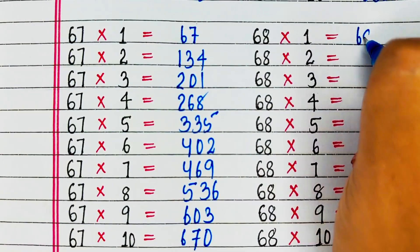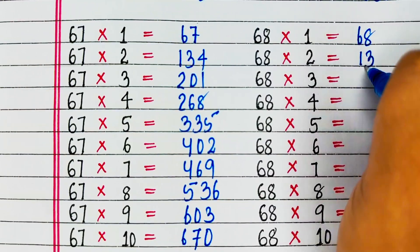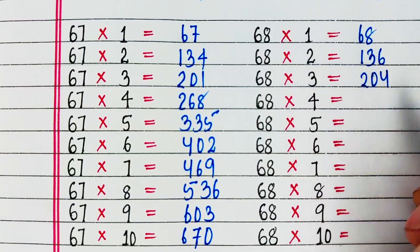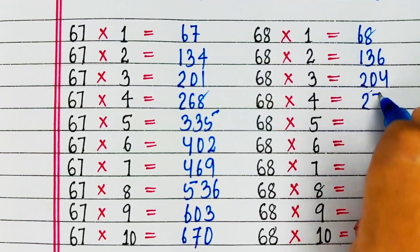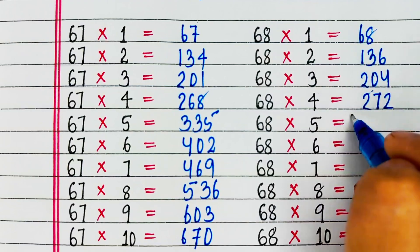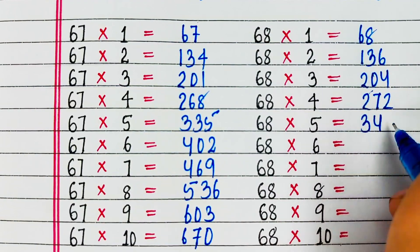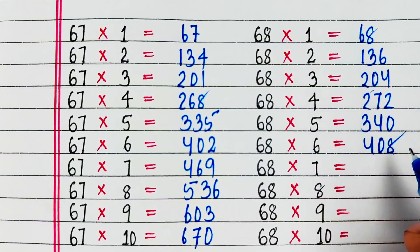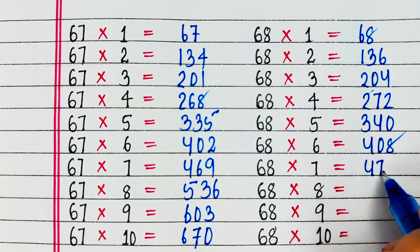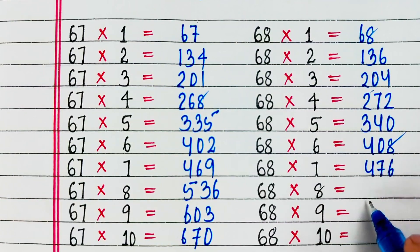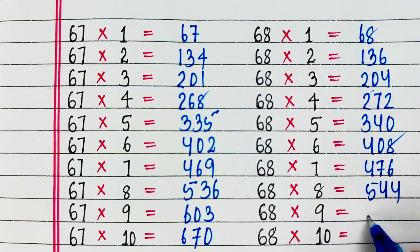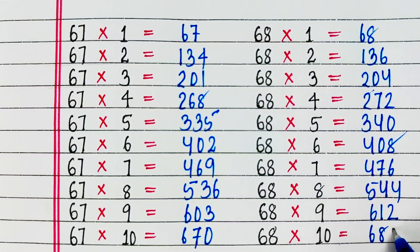Next is table of 68. 68 4s are 272, 68 5s are 340, 68 6s are 408, 68 7s are 476, 68 8s are 544, 68 9s are 612.